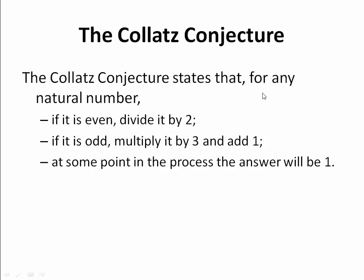The conjecture states that for any natural number, if it is even, divide it by 2. If it is odd, multiply it by 3 and add 1. At some point in this process, the answer will be 1. Hmm, that sounds simple.